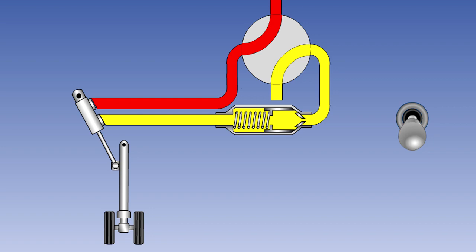You can operate the switch with your mouse to observe the operation of the restrictor valve as the gear moves up and down.